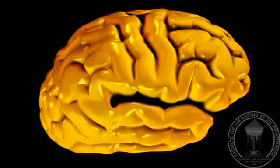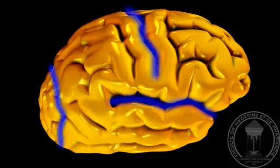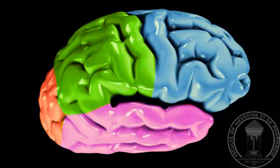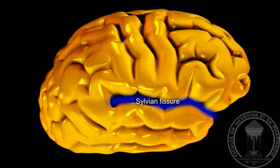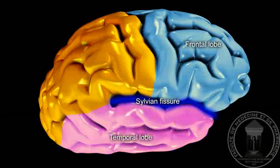Each hemisphere is divided by deep fissures that define lobes. The first is the lateral sulcus, or Sylvian fissure, where lies the middle cerebral artery. It separates the frontal lobe from the temporal lobe.